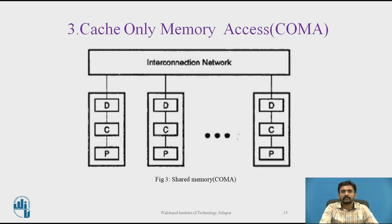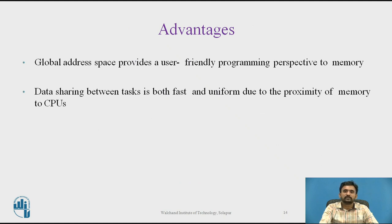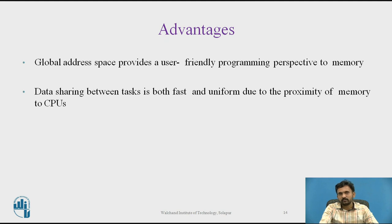Cache local to each CPU alleviates the problem, and each processor can be equipped with private memory to store data of computations that need not be shared by other processors. The advantages of shared memory architecture include: a global address space that provides a user-friendly programming perspective to memory, and data sharing between tasks is both fast and uniform due to the proximity of memory to CPU.